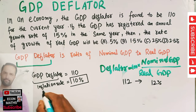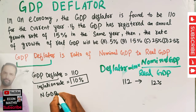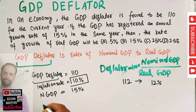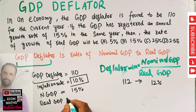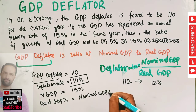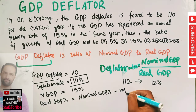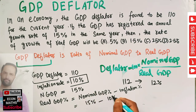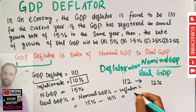We are also given that our nominal GDP has shown a growth rate of 15%. Then what will be the real GDP? Real GDP growth will be equal to nominal GDP growth minus inflation rate. Nominal GDP growth is given as 15% and inflation rate is 10%, so our real GDP growth would be 5%.